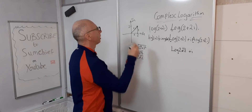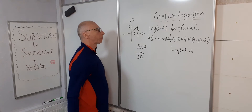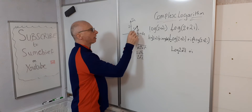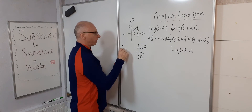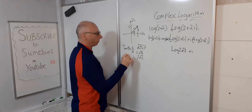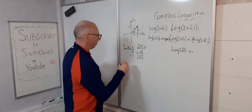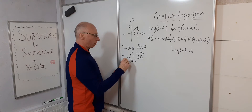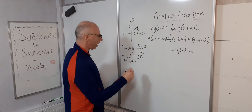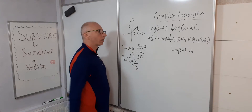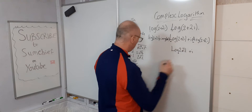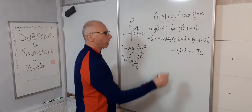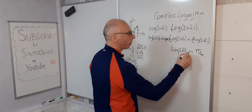So log of 2 root 2, plus i times the argument of 2 plus 2i. We need the angle theta. We know tangent of theta is 2 over 2, using SOHCAHTOA. So tangent theta equals 2 over 2 which equals 1. Therefore inverse tangent of 1 gives us theta, and we know that arctan(1) is pi over 4.